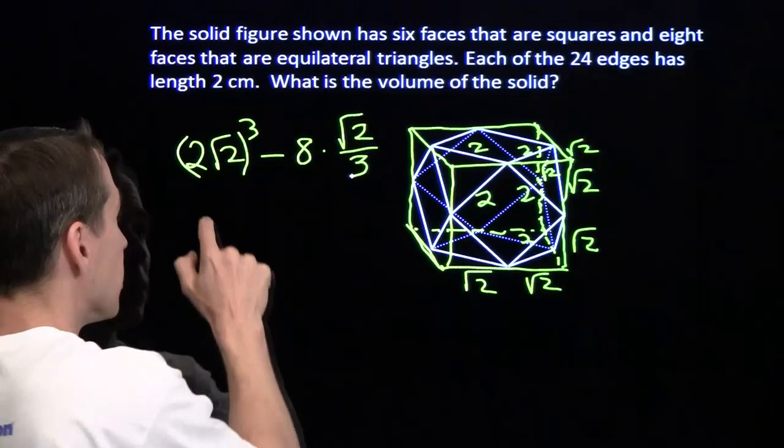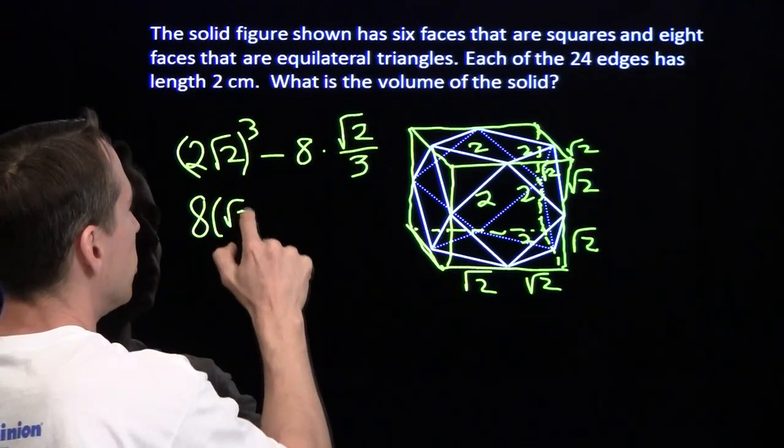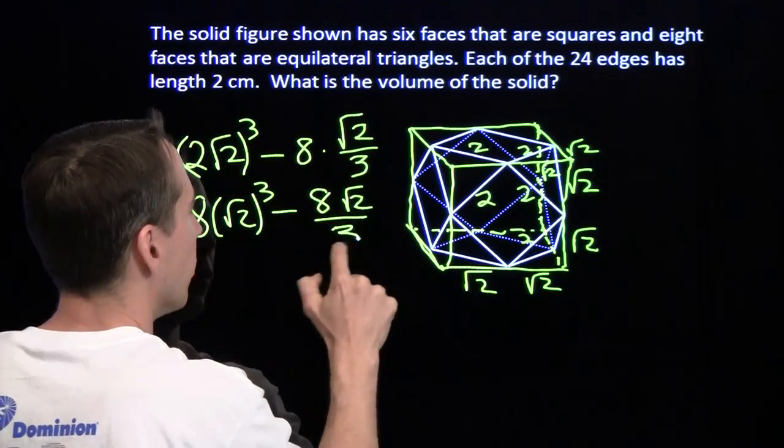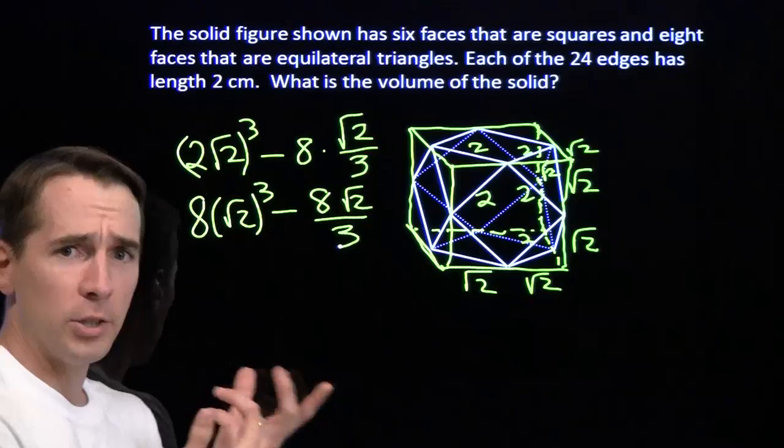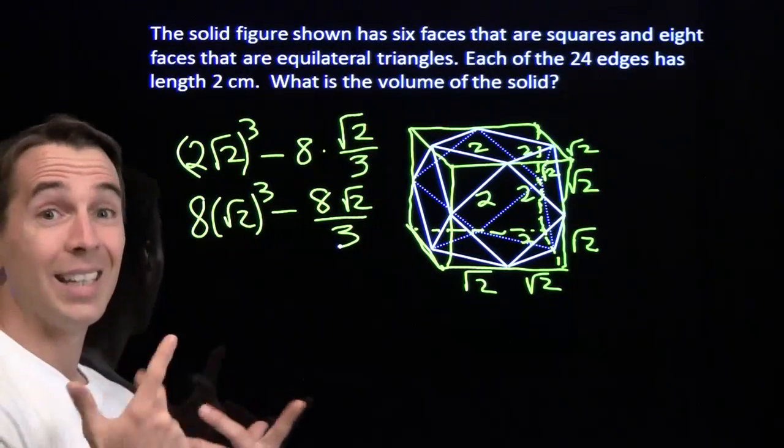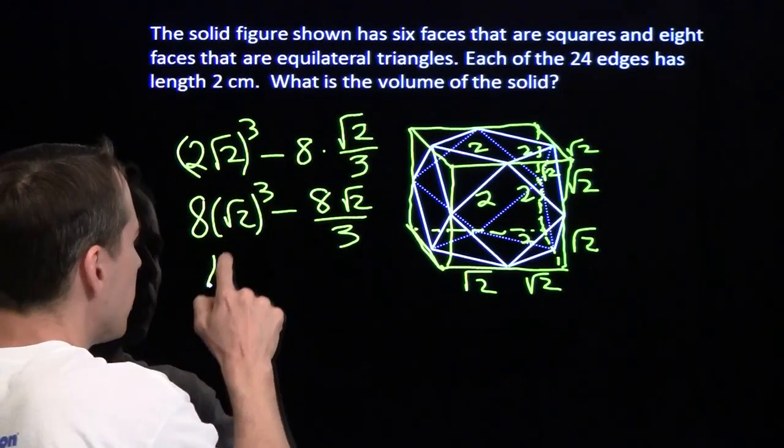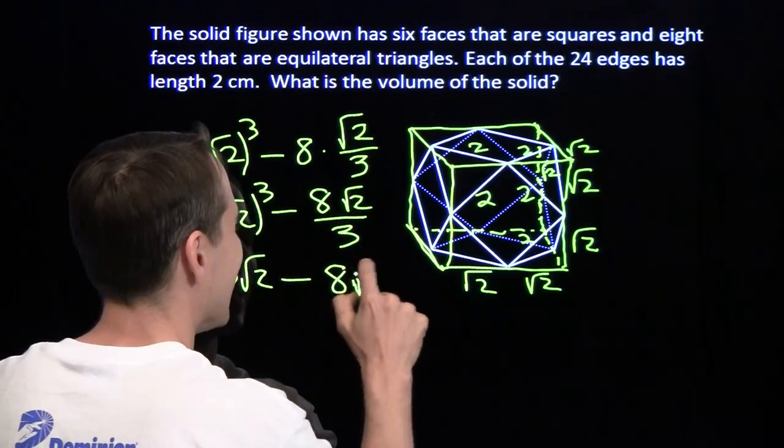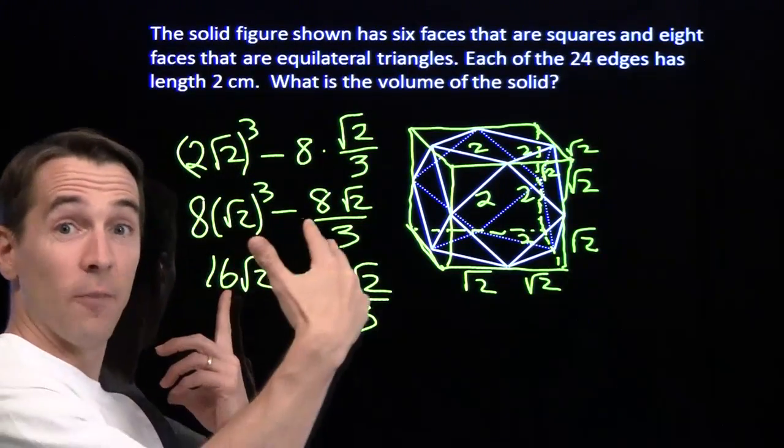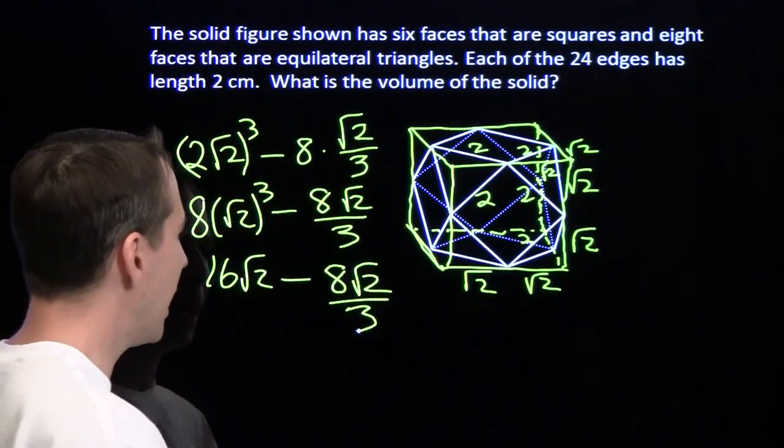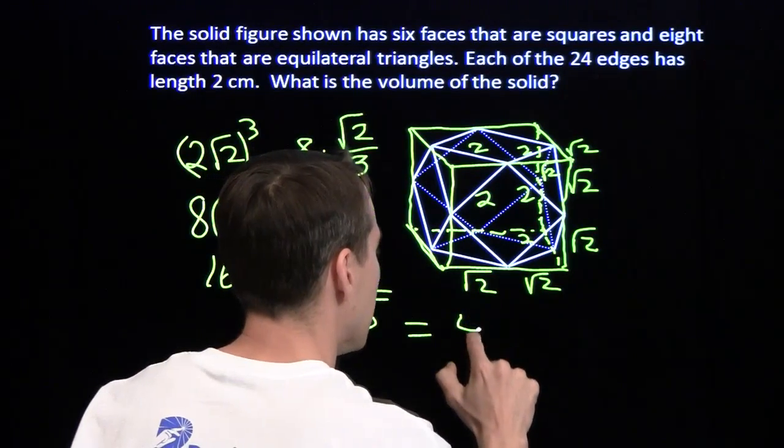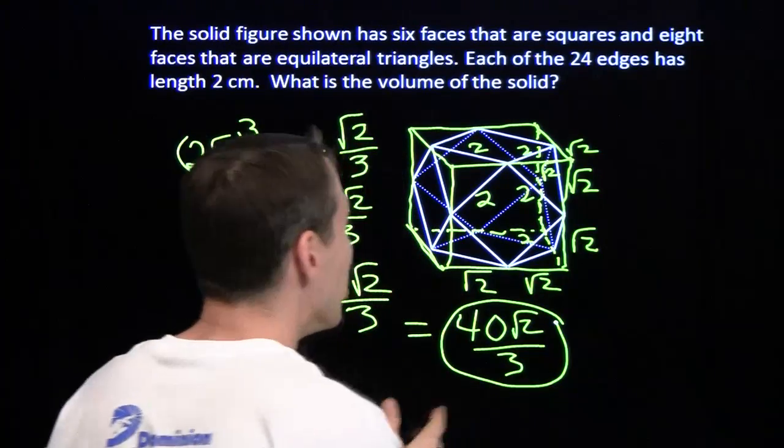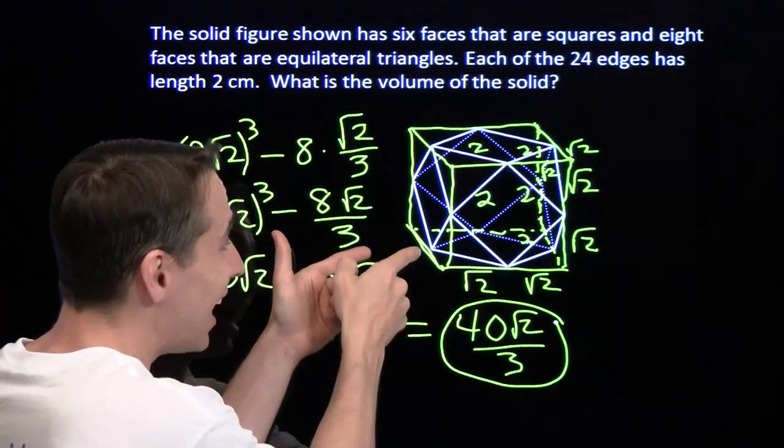So we just need to subtract off 8 times the square root of 2 over 3. So now we just cube this out. We cube the 2. That gives us 8 times the square root of 2 cubed. And we're going to subtract 8 times the square root of 2 over 3. And then cubing this out, we multiply 2 square root of 2. That gives us a 2. Multiply that 2 by 8. That gives us a 16. And we still have that 1 square root of 2 remaining. We have 16 times root 2 minus 8 root 2 over 3. 16, that's 48 over 3. 48 minus 8 gives us 40. So this gives us 40 times the square root of 2 over 3. And just like that, we are done.